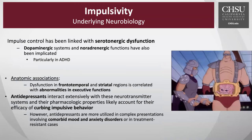If we look at the underlying neurobiology of impulsivity, it's been linked to a number of different neurotransmitter systems — serotonergic dysfunction, as well as dopaminergic and noradrenergic functions, particularly in ADHD. It makes sense when we think about the inhibition parts of our brain that dysfunction in the frontal temporal areas, perhaps the striatal regions, is associated with abnormalities in executive function and the ability to appreciate consequences. Our antidepressant medications interact extensively with those neurotransmitter systems, and their pharmacologic properties likely account for some of their ability to curb impulsive behavior.